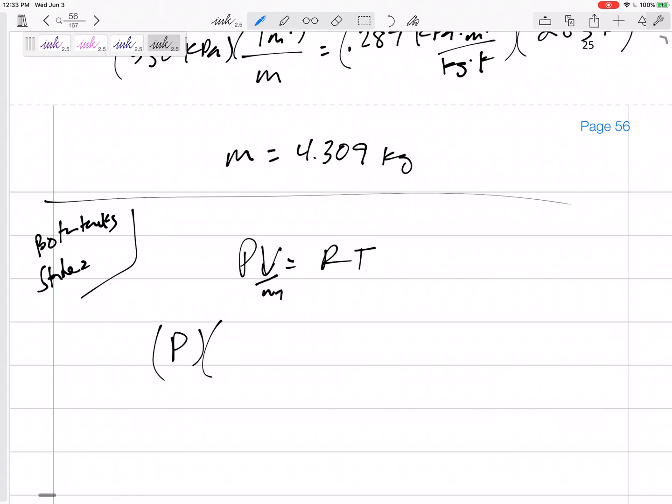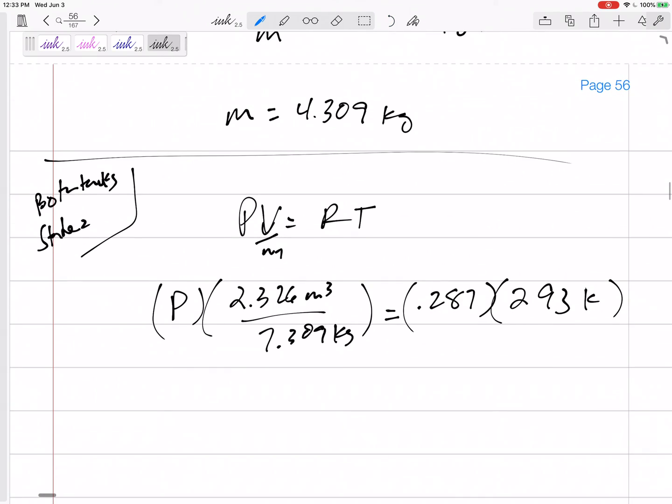Pressure, what I'm looking for, volume total volume now 2.326 m³ per total mass 7.309 kg equals R 0.287 kPa·m³/kg·K. Temperature was 20°C, this would be 293 K. Okay, and then solve for P. One equation, one unknown. Isolate that, solve for it. 264 kPa.